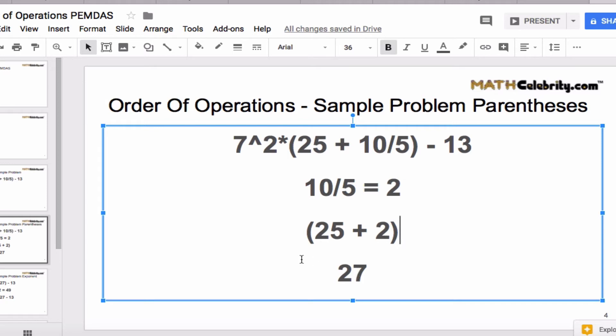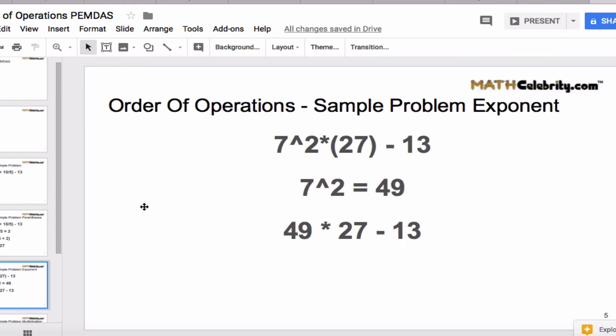So on the next slide here I'm going to show you whenever you're doing a PEMDAS problem you want to evaluate and then simplify. So let's go to the next slide here. We've simplified the piece inside the parentheses to be 27, so we're left with 7 squared times 27 minus 13.